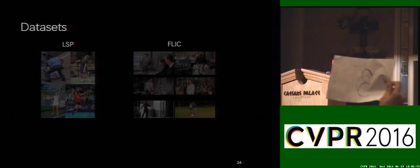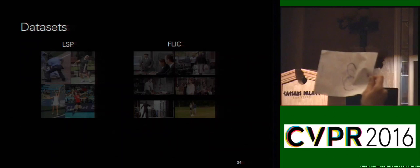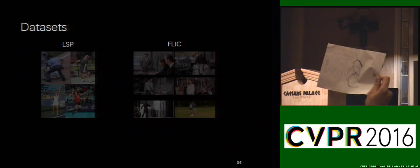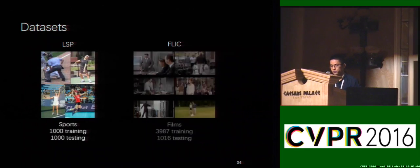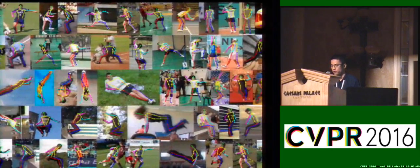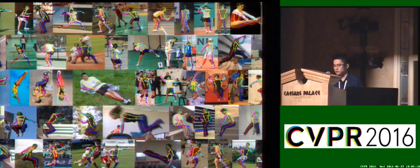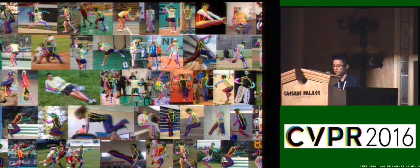We first evaluate our method on two widely used public datasets: the LSP dataset and the FLIC dataset. The qualitative results on the LSP dataset are shown in this slide. The proposed method is robust to highly articulated poses with variant orientation, cluttered background, and occlusions.